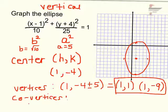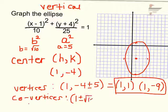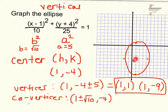The co-vertices are the square root of 10 units in the x direction from the center. So I add and subtract the square root of 10 from the x coordinate: (1 ± √10, −4). I take that center point and add or subtract the square root of 10 from the x value of 1.